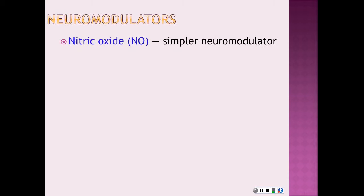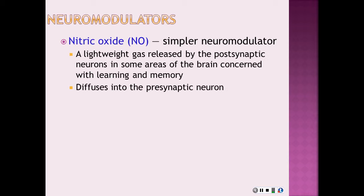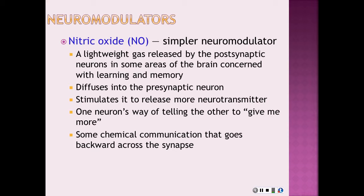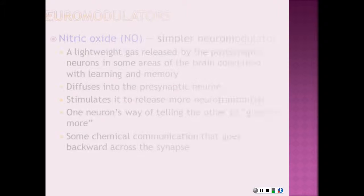Nitric oxide is a similar neuromodulator. It's a gas released by postsynaptic neurons in some areas of the brain, and it stimulates the presynaptic neuron to release more neurotransmitter — one neuron's way of telling the other to give it more. This is chemical communication that goes backward across the synapse.